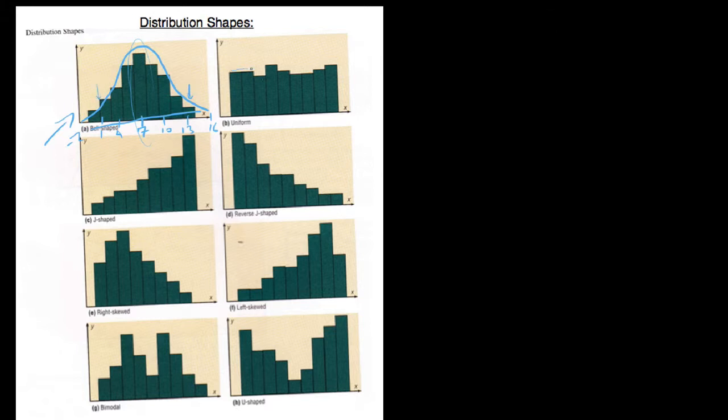Uniform distributions are things that are relatively straight across the board — anything that's uniform is straight across the board, with no hump in the middle.